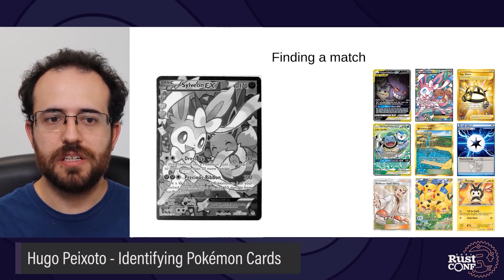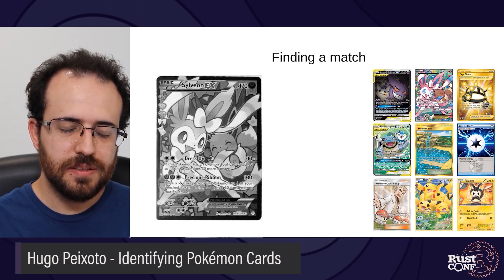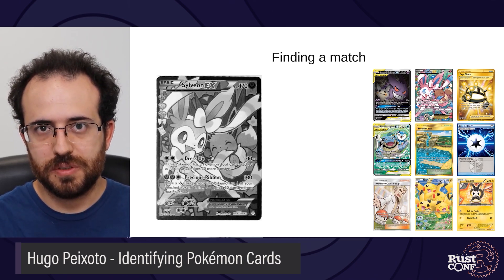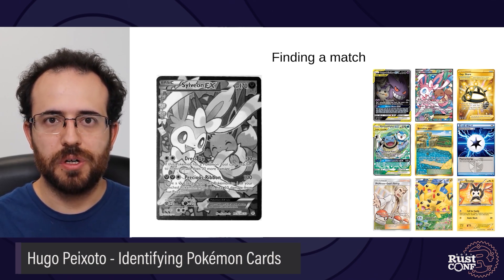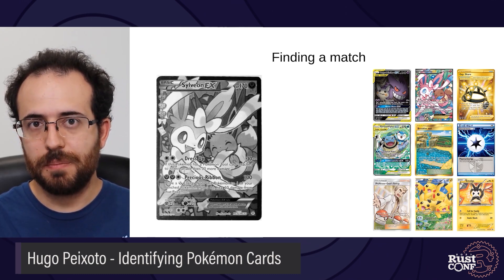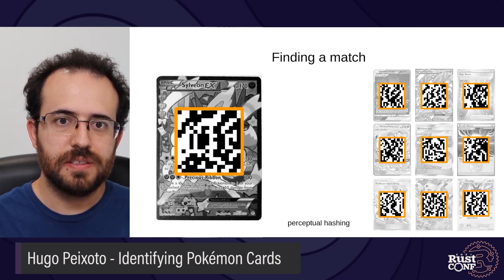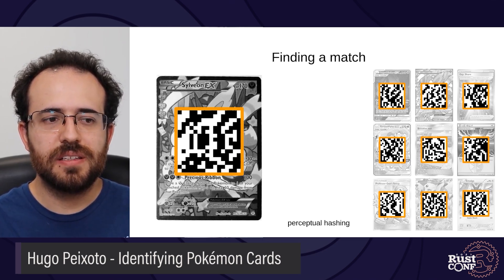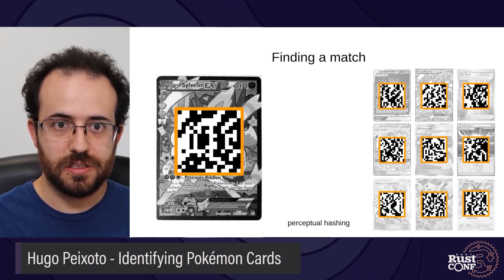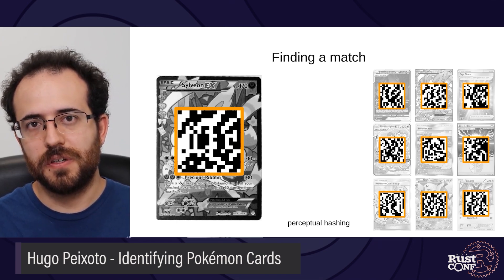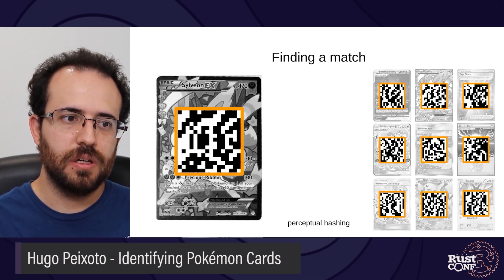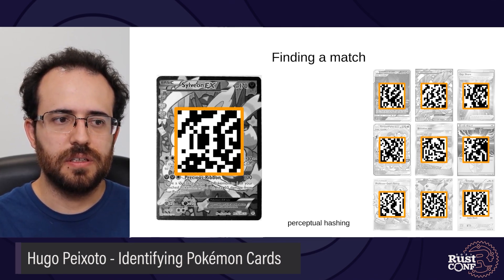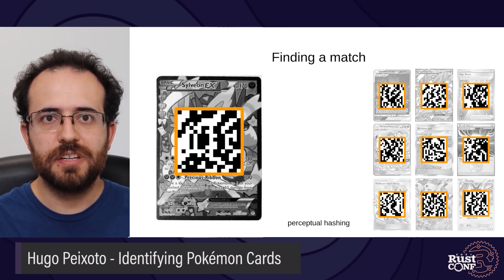Now we can take this image and search for matches in our dataset. Since each image has around 1 million pixels and there are 14,000 cards, we can't compare them directly — this would take forever. So we need to reduce the amount of information we're comparing, and we're going to do this using a perceptual hash. A perceptual hash is a smaller representation of the image that still keeps the essence of it. The main idea is that similar images will have similar perceptual hashes. I picked a 16x16 hash — that's 256 bits or 32 bytes — and comparing that is fast enough.